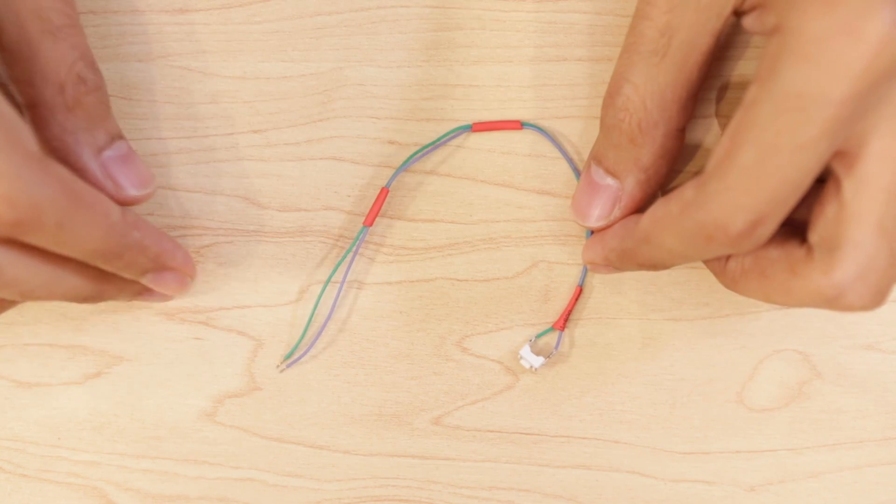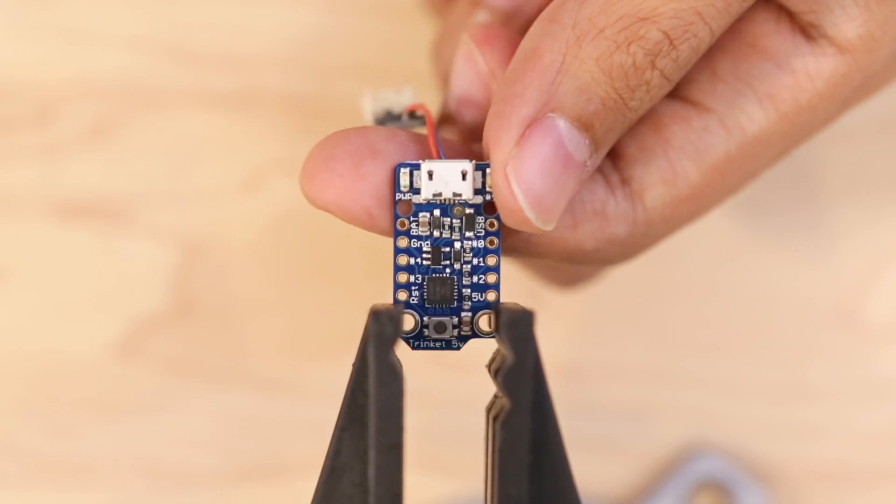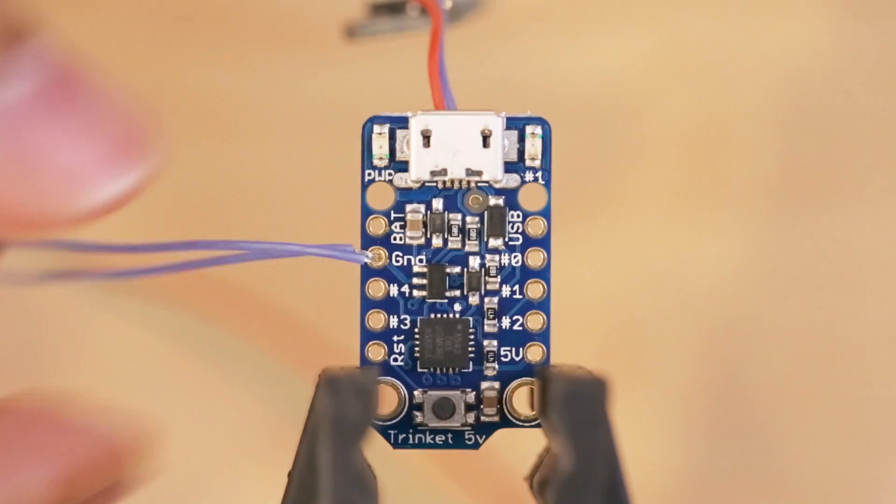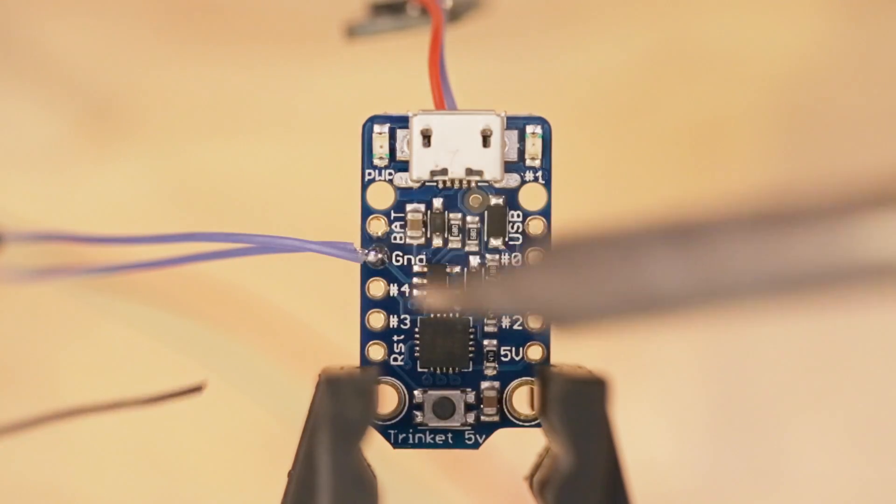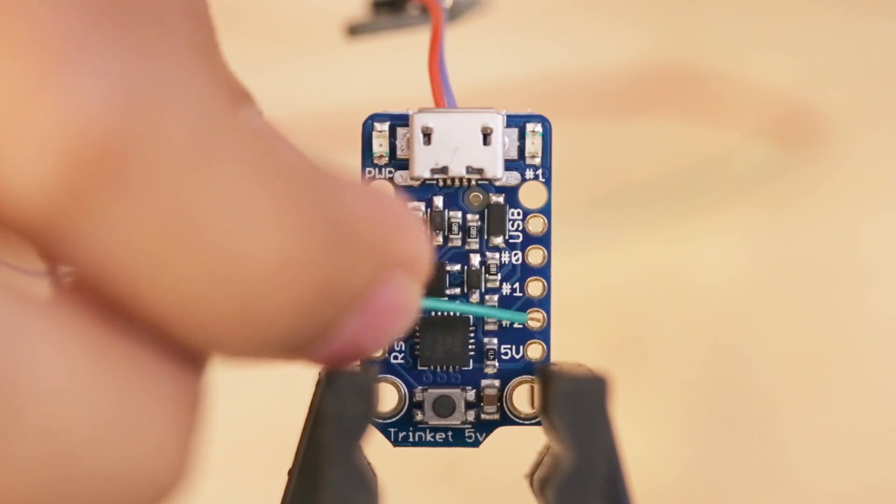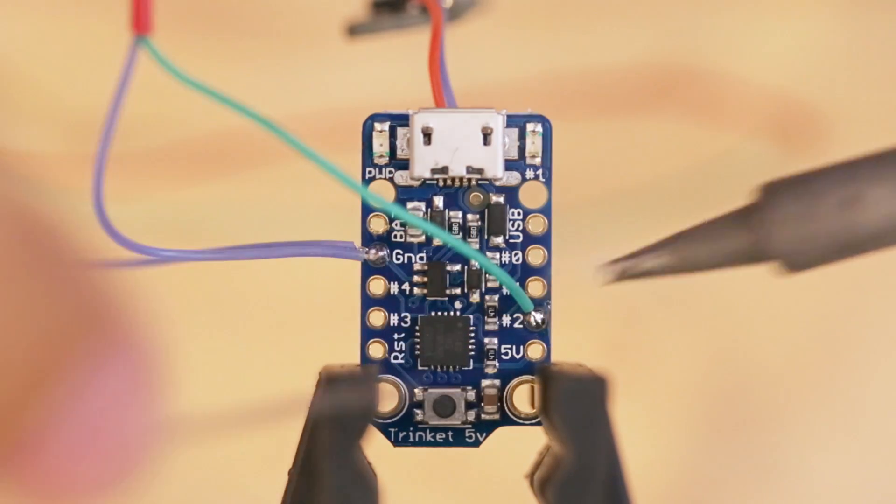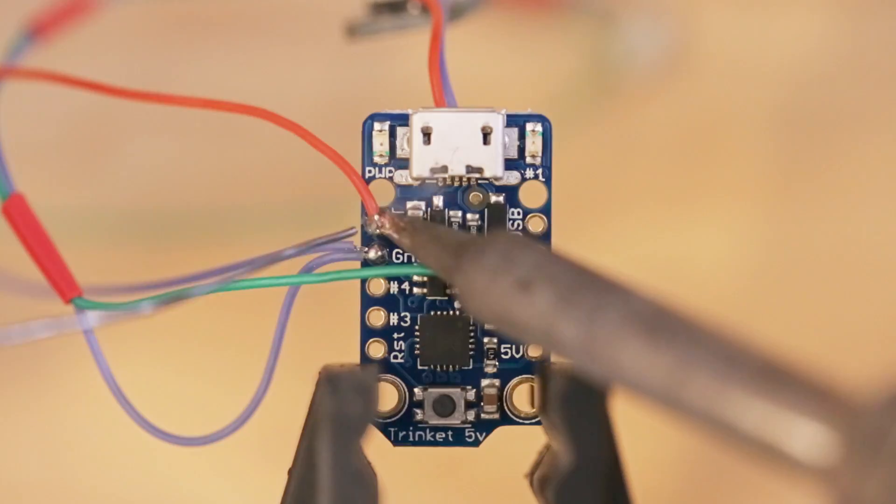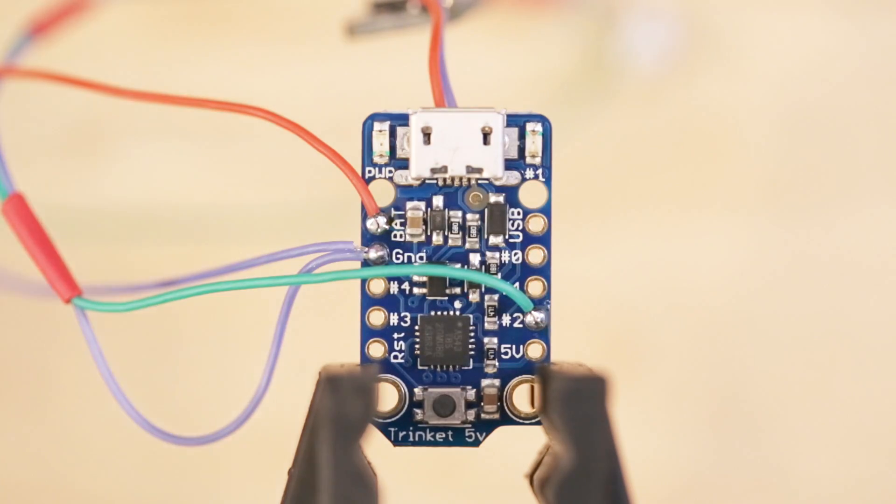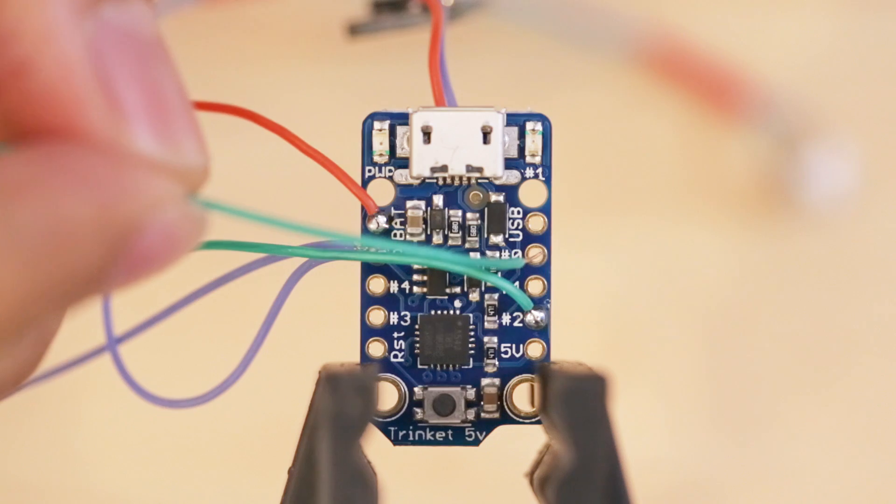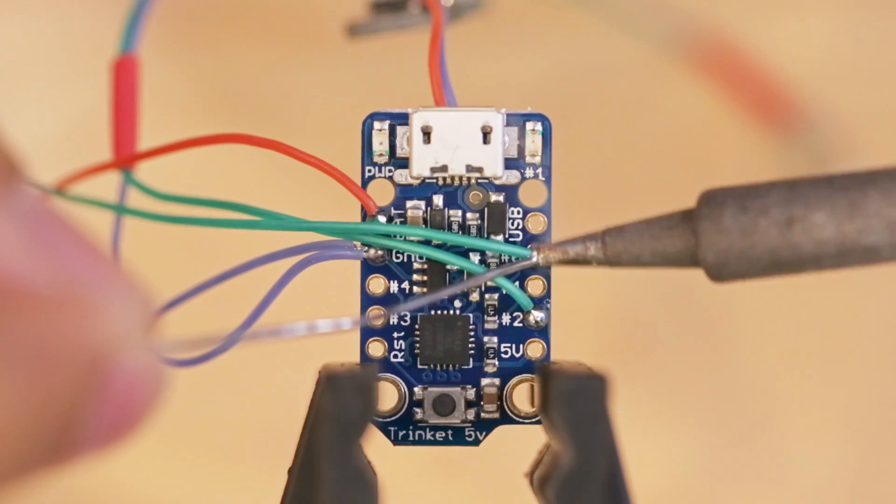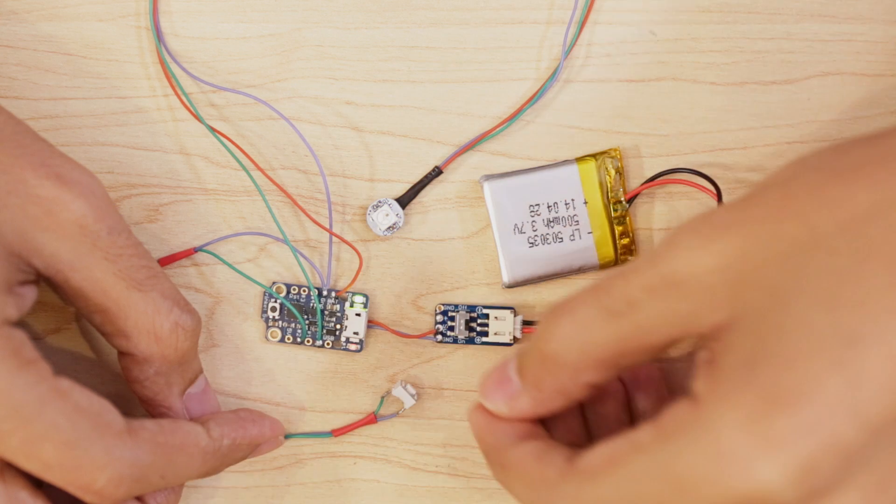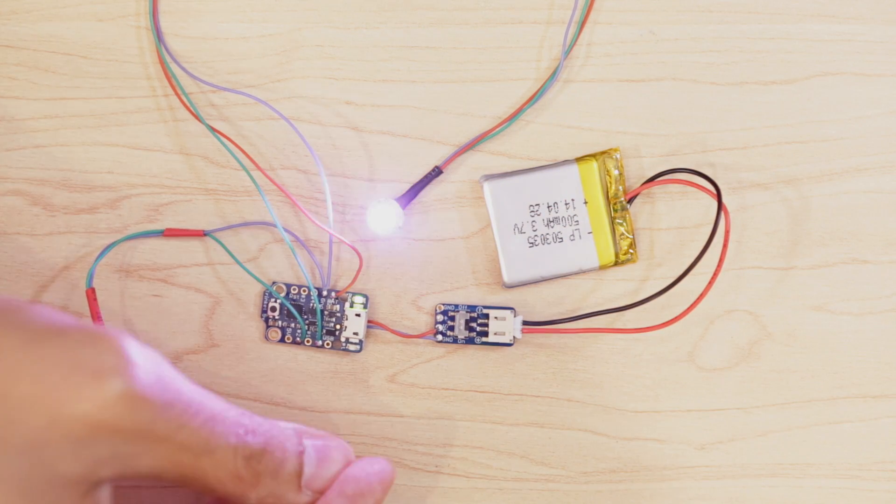Now with the button and the Neopixel wired up, I can connect them to the trinket. I tied the ground wires from the button and the Neopixel together and fitted them into the ground pin on the trinket and soldered them in place. Then connected the second wire from the button to pin number 2 on the trinket. For the Neopixel, the wire for power will go into the battery pin. And the last connection is the data from the Neopixel which will go into pin number 0 on the trinket. With all the connections wired up, I can do a final test of the circuit to make sure everything is working.